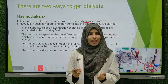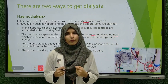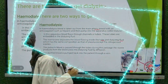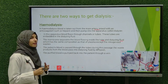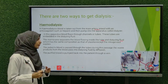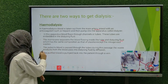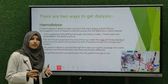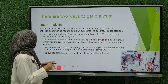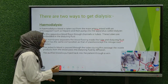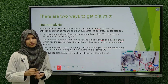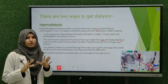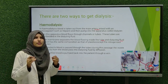The dialyzing fluid has the same composition as that of plasma, except for the nitrogenous waste. The patient's blood is passed through the tubes, and during the passage, waste products from the blood pass into the dialyzing fluid by diffusion. The purified blood is then pumped back into the patient through a vein.